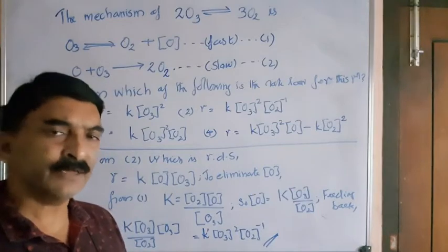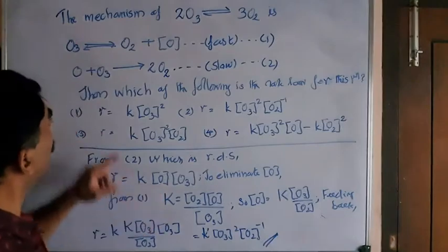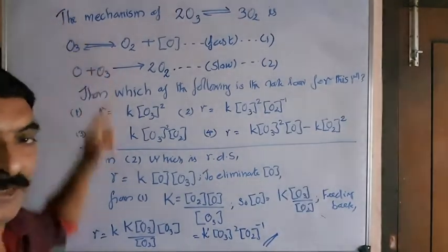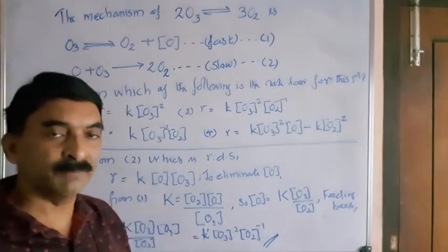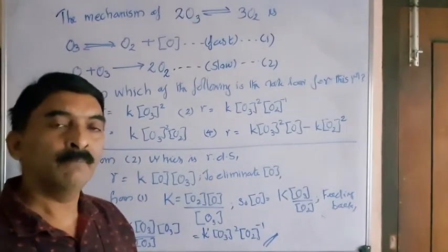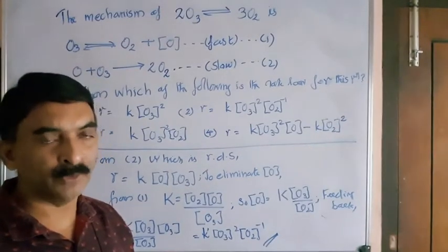And check for any possibility that we can replace this out. Look at the mechanism. Here, the first equation involves a reversible process with an equilibrium constant value. By making use of that, we can replace square bracket O. How?